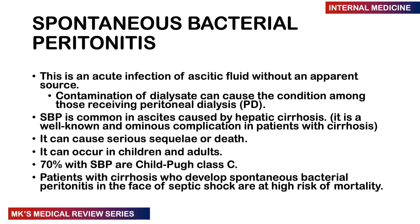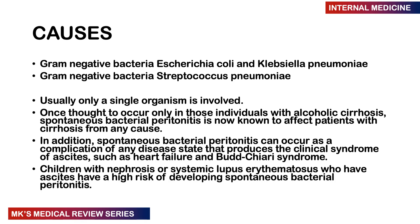SBP is a common complication of patients with ascites and hepatic cirrhosis. It's very deadly and can lead to serious sequelae and death. It's common in children but can also occur in adults. 70% of patients with SBP have a Child-Pugh score that's Class C. If a patient with cirrhosis develops SBP and also develops septic shock, there is a higher risk of dying. It's most often caused by a single organism — either a gram-negative bacterium such as Escherichia coli or Klebsiella pneumoniae, or a gram-positive organism such as Streptococcus pneumoniae. It was once thought to occur only in alcoholic cirrhosis, but now we know that anyone with cirrhosis of any cause has a risk of developing SBP.